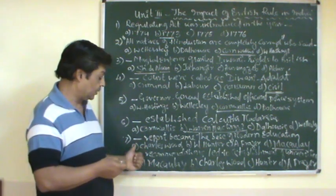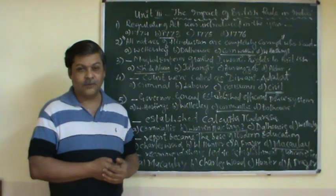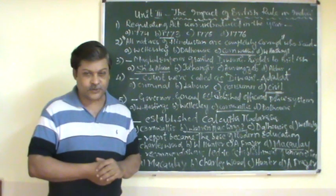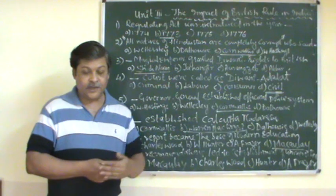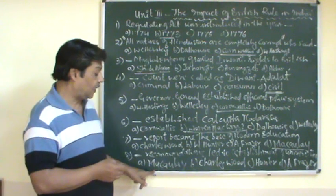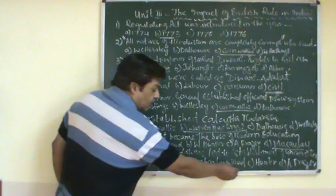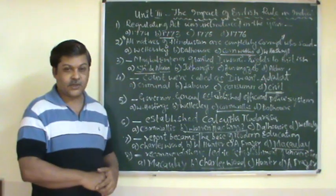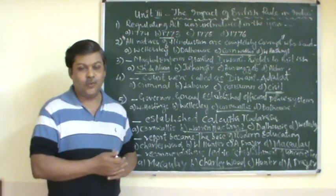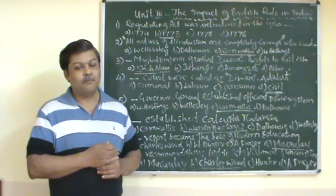Whose recommendations led to the establishment of universities in India? Universities were established during the Governor Generalship of Dalhousie at Kolkata, Madras, and Bombay. The choices are Macaulay, Charles Wood, Hunter, and Fraser recommendations. The answer is the Charles Wood recommendation of 1854, which led to the establishment of three universities — Kolkata, Madras, and Bombay Universities.